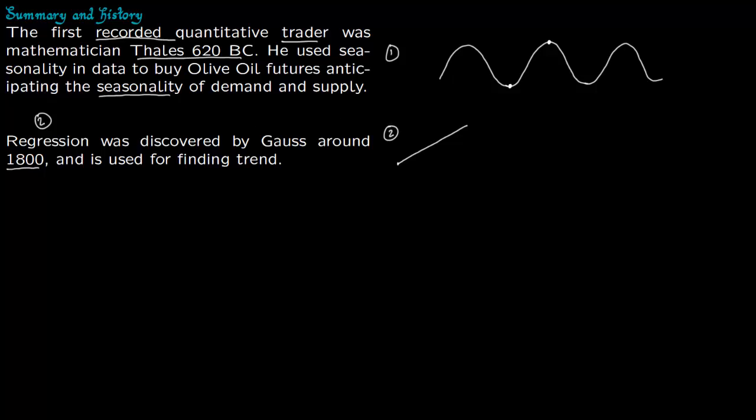So we have two deterministic things now. One was seasonality which was used in BC. The second was regression which came around 1800s. When people talked about deterministic data, they talked about trend which was increasing. You have seasonalities but you also have an upward trend because the population is increasing and the seasonality also remains there.